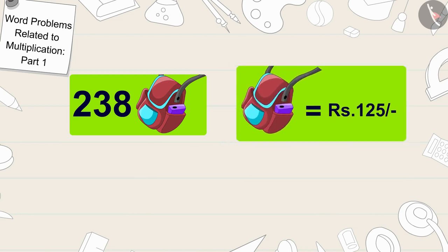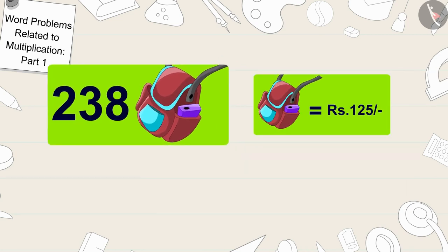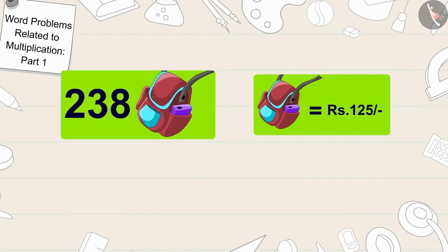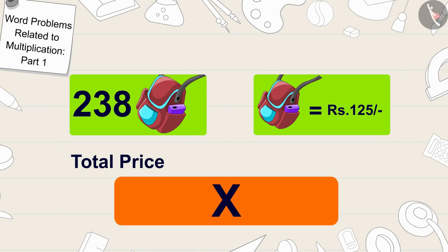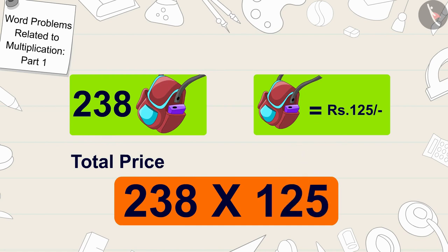And we have to find out the total price of 238 bags, so we will multiply 238 by 125.